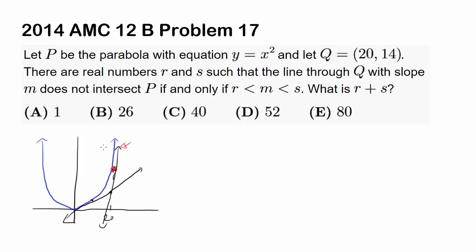Because if the slope is higher than this tangent line, we are going to intersect the parabola right here. And if the slope is lower than this line, then you are going to intersect the parabola like this. So we want our slope to be right in between these two lines. That's the starting point for this question.